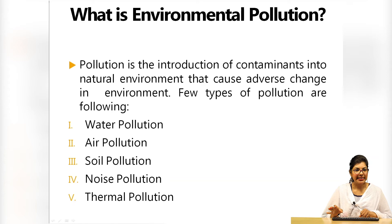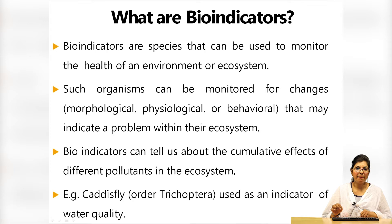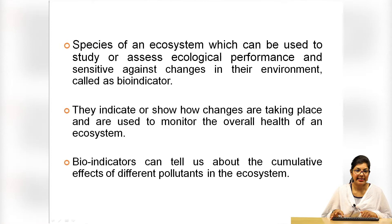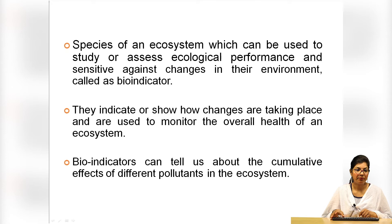Bioindicators are species that can be used to monitor the health of an environment or ecosystem. Such organisms can be monitored for changes that may indicate a problem within the ecosystem. Bioindicators can tell us about the cumulative effects of different pollutants in the ecosystem. They are living organisms — plants, planktons, animals, microbes — that detect any changes in the environment. Species of an ecosystem used to study ecological performance and sensitive to environmental changes are called bioindicators; they indicate how changes are taking place and are used to monitor the overall health of an ecosystem.